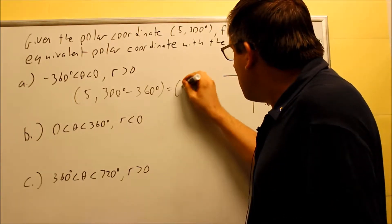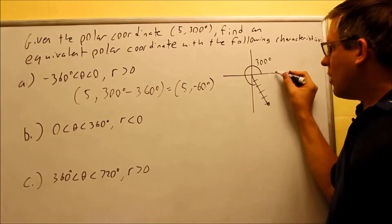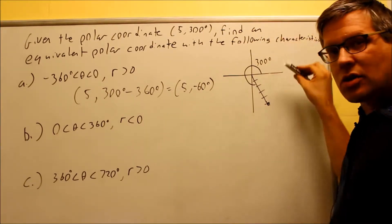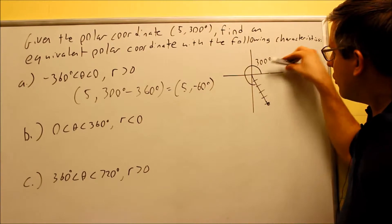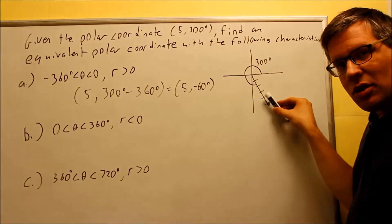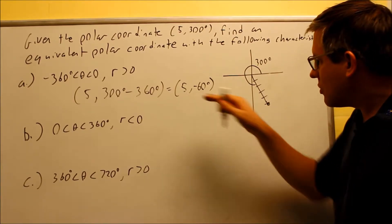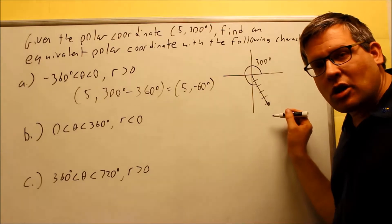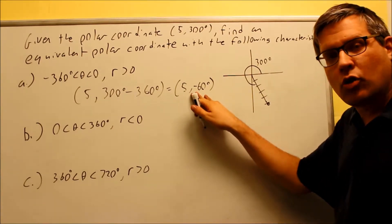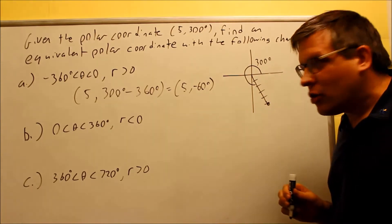So our answer is going to be 5 and negative 60 degrees. Let's see if that makes sense with our picture here. Now instead of going counterclockwise, I need to go clockwise because of a negative angle. I would go down here 60 degrees. That would take me to the same line there. I would count down 5 spaces and there we go. We end up at the same spot that we started from. So this is considered an equivalent polar coordinate because it allows us to arrive at the same spot when we graphed it.